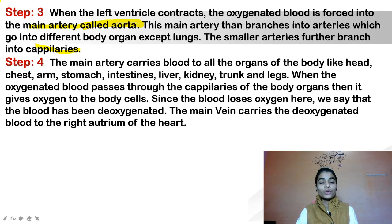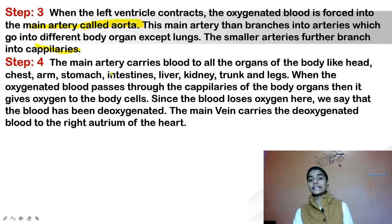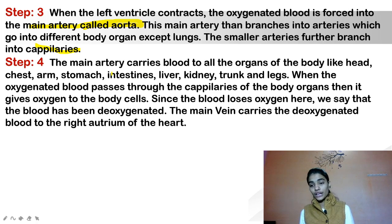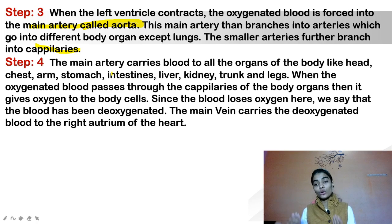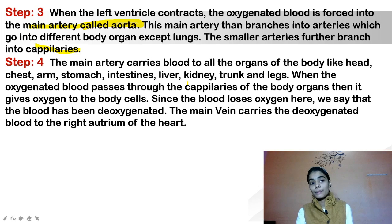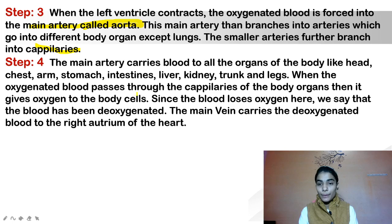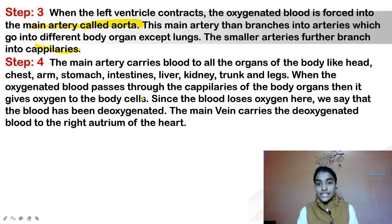Step 4: The main artery carries blood to all organs of the body — head, chest, arm, stomach, intestine, liver, kidney, trunk, and legs. The arteries branch further and oxygenated blood flows to all body organs except the lungs. When the oxygenated blood passes through the capillaries of the body organs, it gives oxygen to the body cells. Since the blood loses oxygen here, it becomes de-oxygenated.